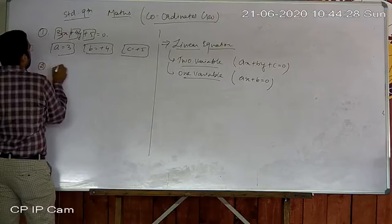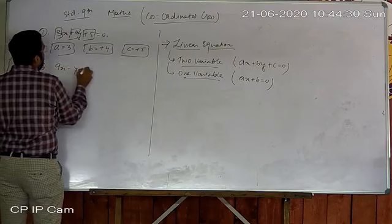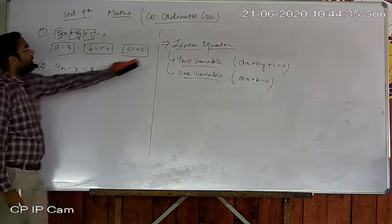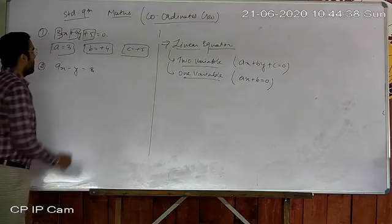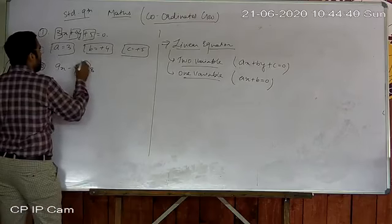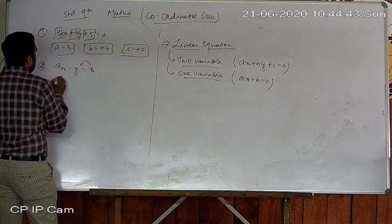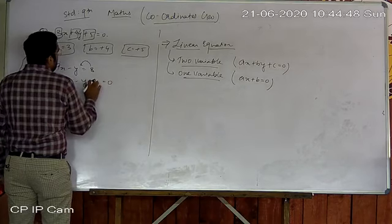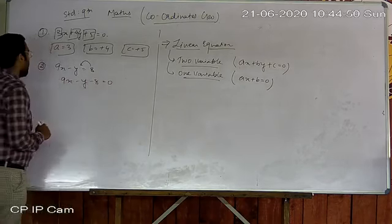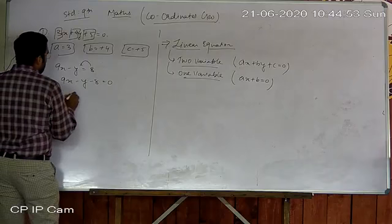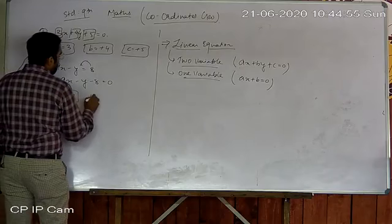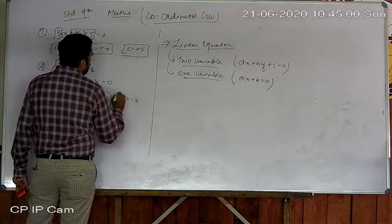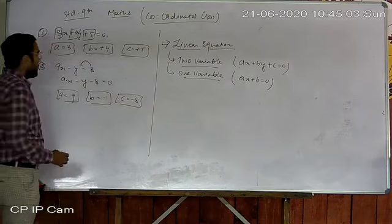The second equation is 9x − y = 8. To match the standard formation, we shift 8 to the other side, giving 9x − y − 8 = 0. So a is 9, b is −1, and c is −8.